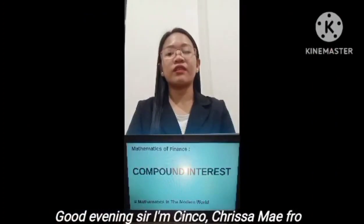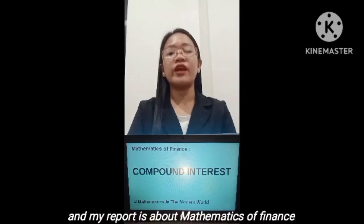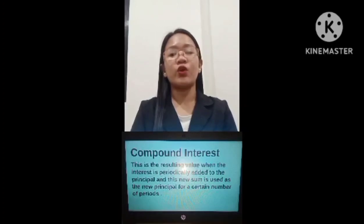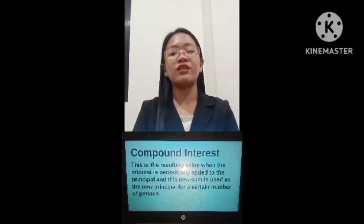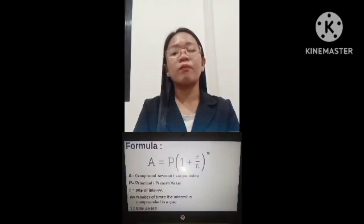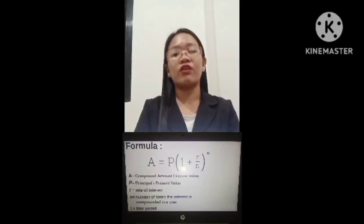Good evening, sir. I'm Sinko Krisa May from BSF 1A, and my report is about mathematics of finance — compound interest. Compound interest is the resulting value when the interest is periodically added to the principal, and this new sum is used as the new principal for a certain number of periods. In short, the interest is computed repeatedly for a certain conversion period. The compounding or conversion period is the time between successive interest computations.